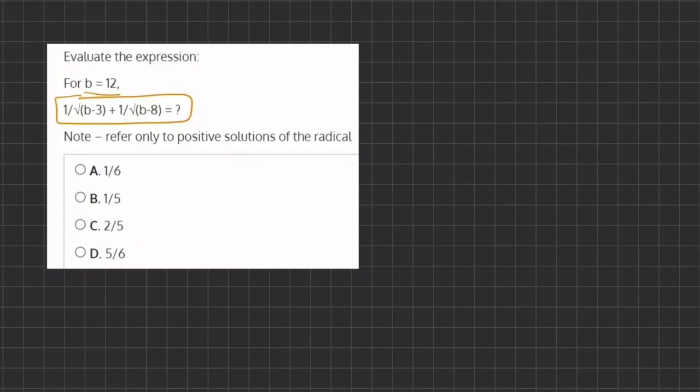So we first have a fraction, we have 1 divided by radical, and instead of b I'm going to be writing in 12 minus 3, plus another fraction, 1 divided by radical, 12 minus 8.